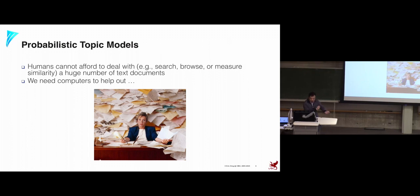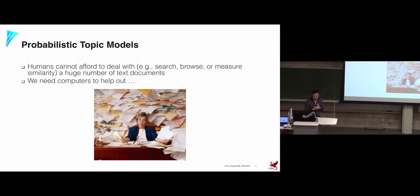Now let's look at what our specific problem is. We're going to talk about probabilistic topic models today as a vehicle to present mean field approximation and variational inference. So what is a topic model, and why did people design topic models?